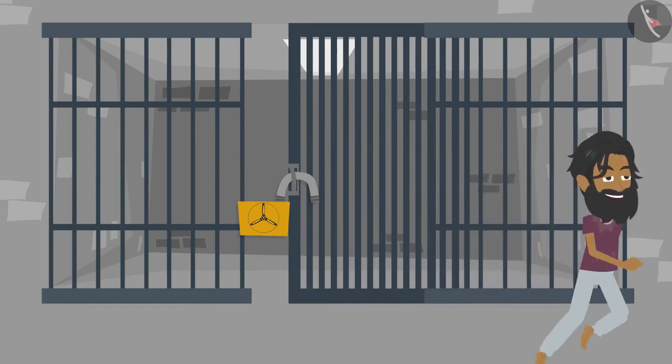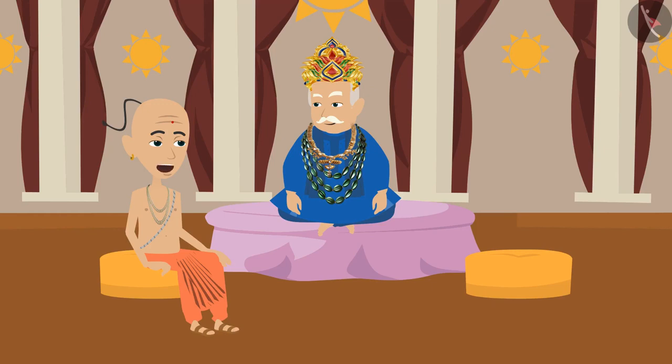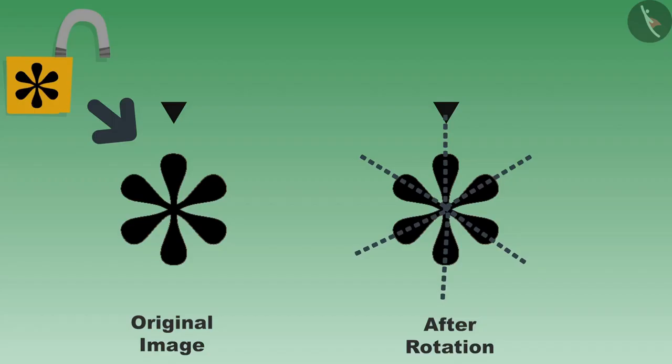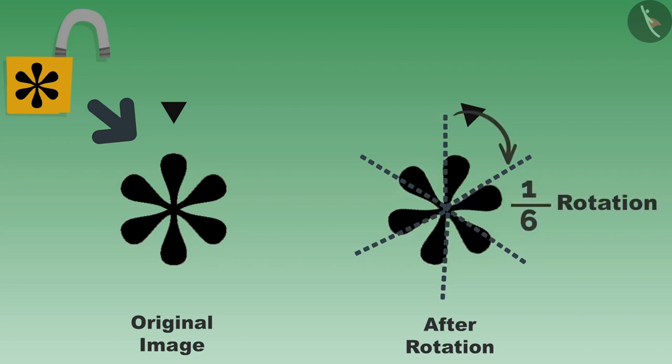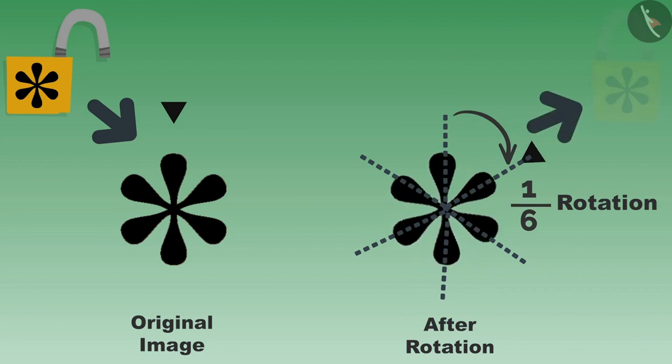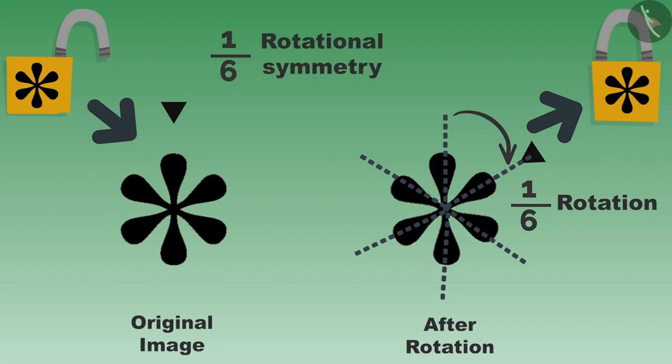When the lock was replaced, the shape of the new lock was like this. One-sixth rotation was needed to close this lock. Because of the one-sixth rotational symmetry in this lock, there would be no difference in its shape even after one-sixth rotation. Due to this, the prisoners got another chance to run away since the lock remained open.